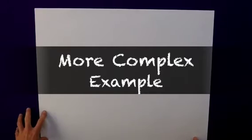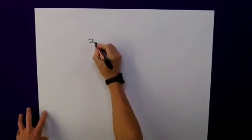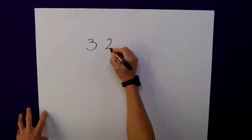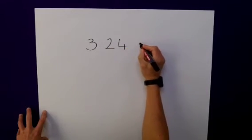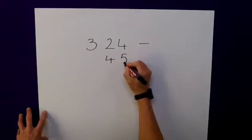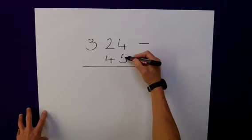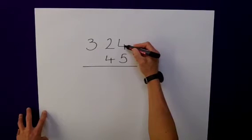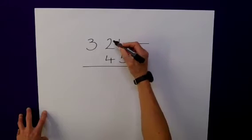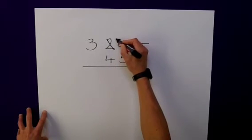Let's consider an example without the aid of the dots, but using the same regrouping method. Let's take 324 and subtract from that 45. Applying the same regrouping method, I cannot subtract 5 from this 4. So, I'm going to regroup one of those tens, take it from there, and make that 14.